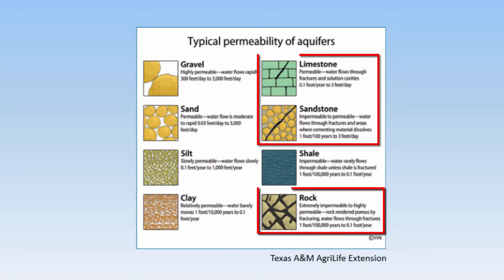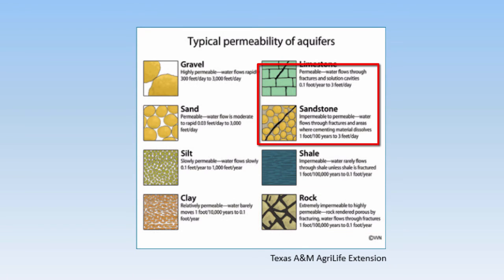In bedrock aquifers, most of the water is stored in fractures and crevices. To be an aquifer, the bedrock has to have enough fracturing and crevices, as well as connections between those openings, to supply sufficient water to a well. The rock itself isn't very porous and doesn't hold much water. One exception to this is sandstone, which not only has fractures and crevices, but can also hold water in the rock itself, where it's not completely cemented.